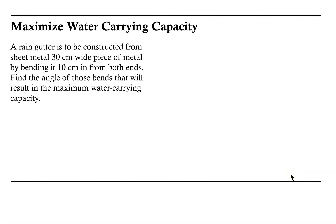Welcome! Let's take a look at maximizing the water carrying capacity of a rain gutter. A rain gutter is to be constructed from a sheet metal 30 centimeters wide by bending it 10 centimeters in from both ends. Find the angle of those bends that will result in the maximum carrying capacity of the gutter.